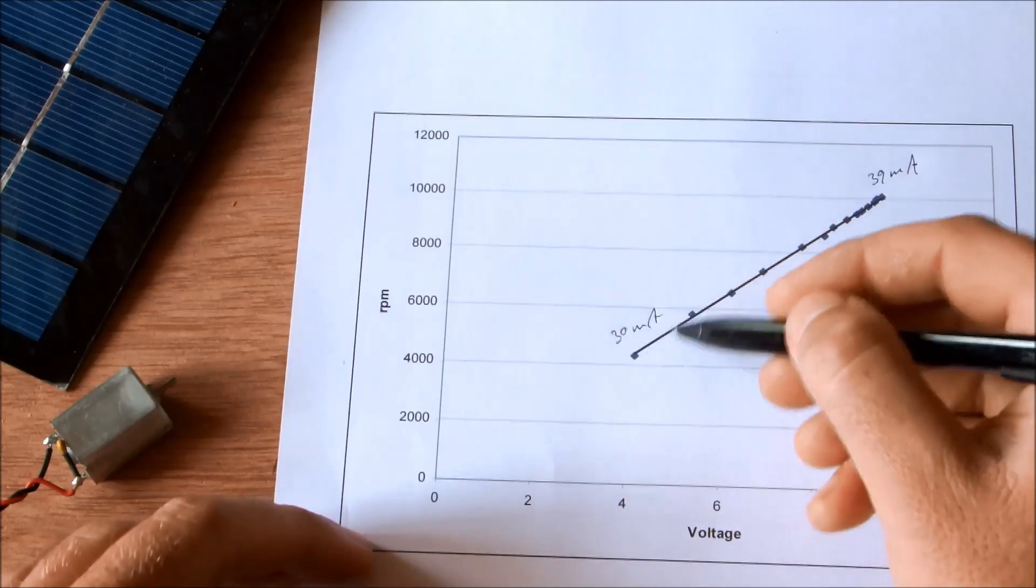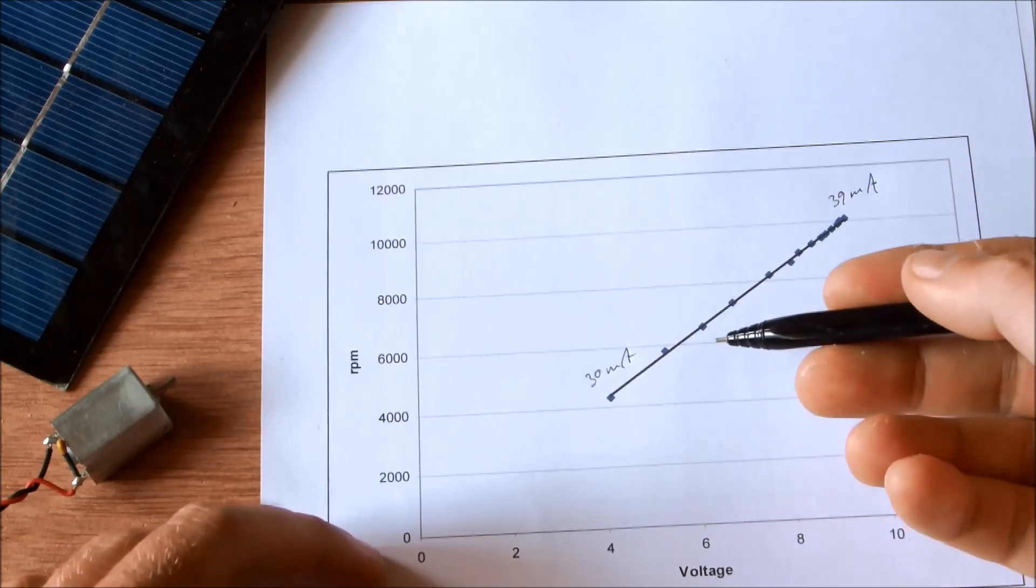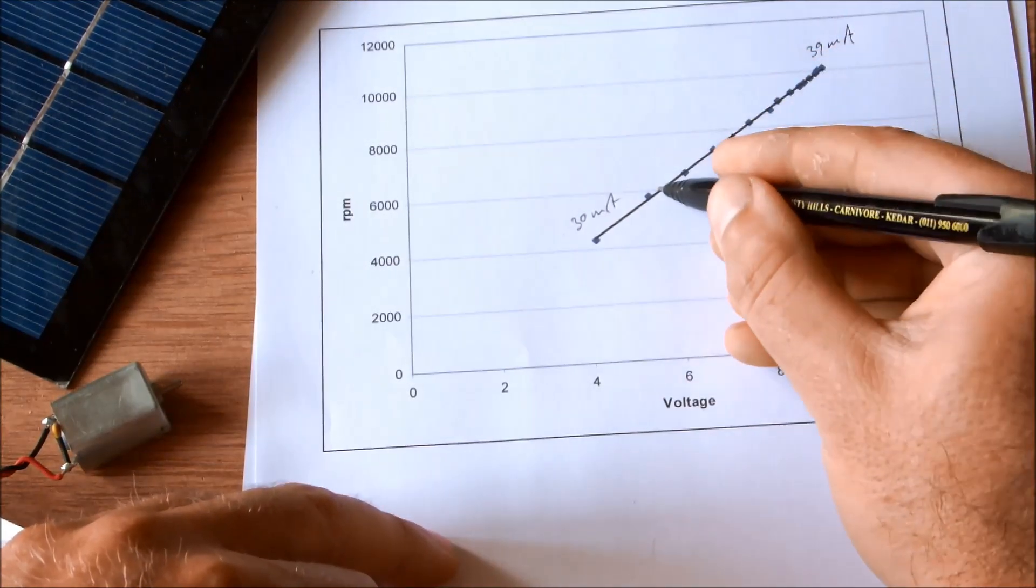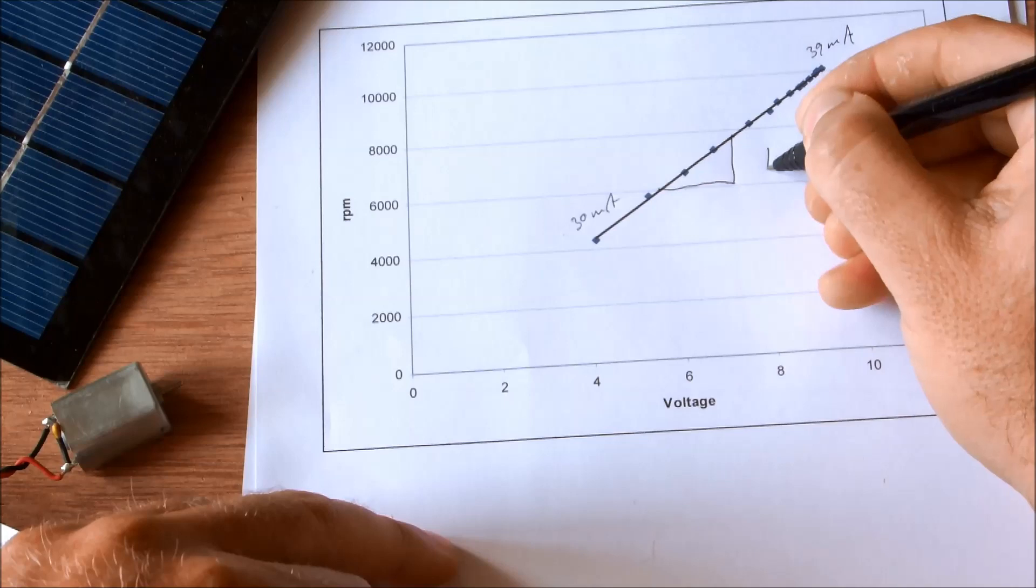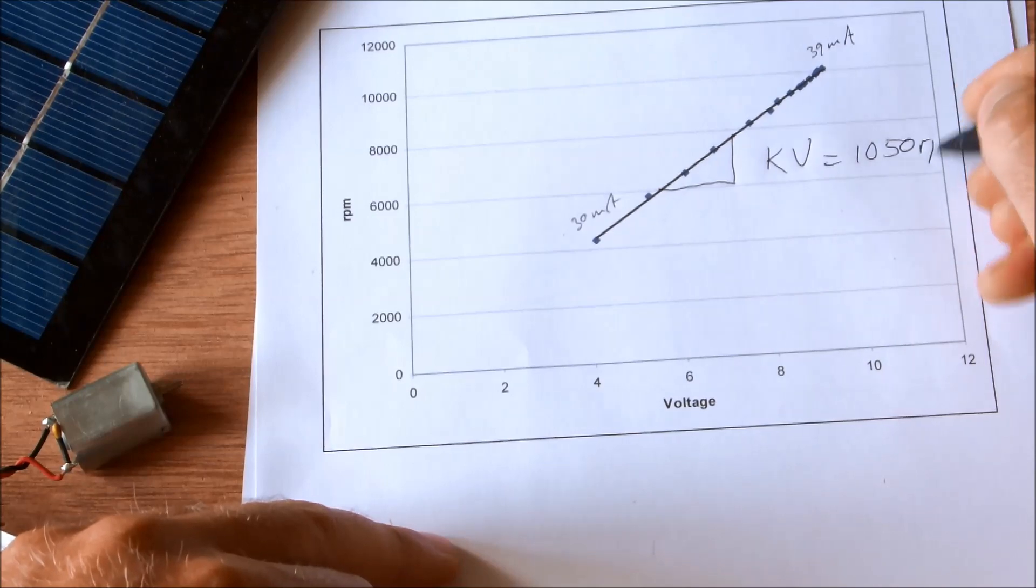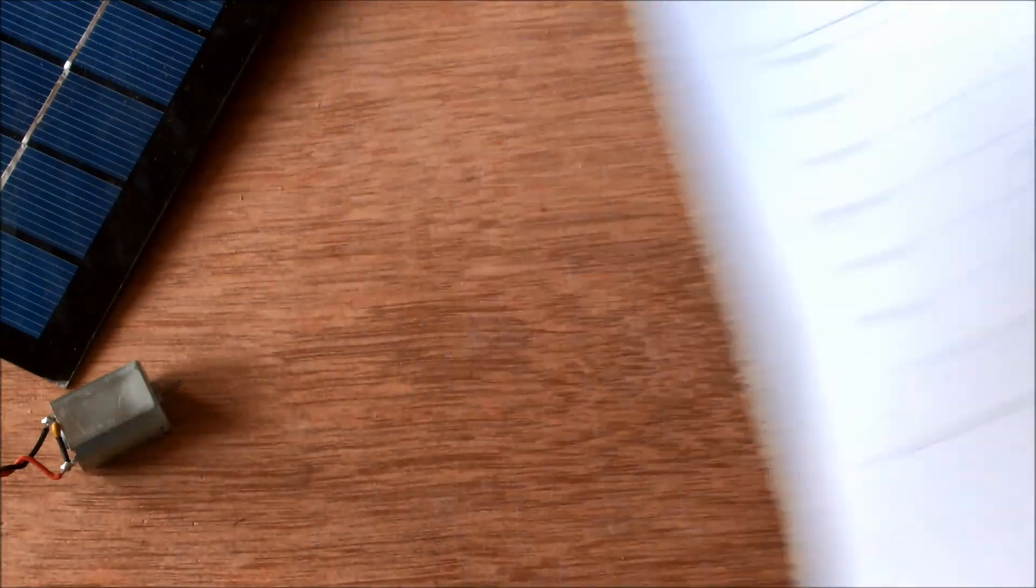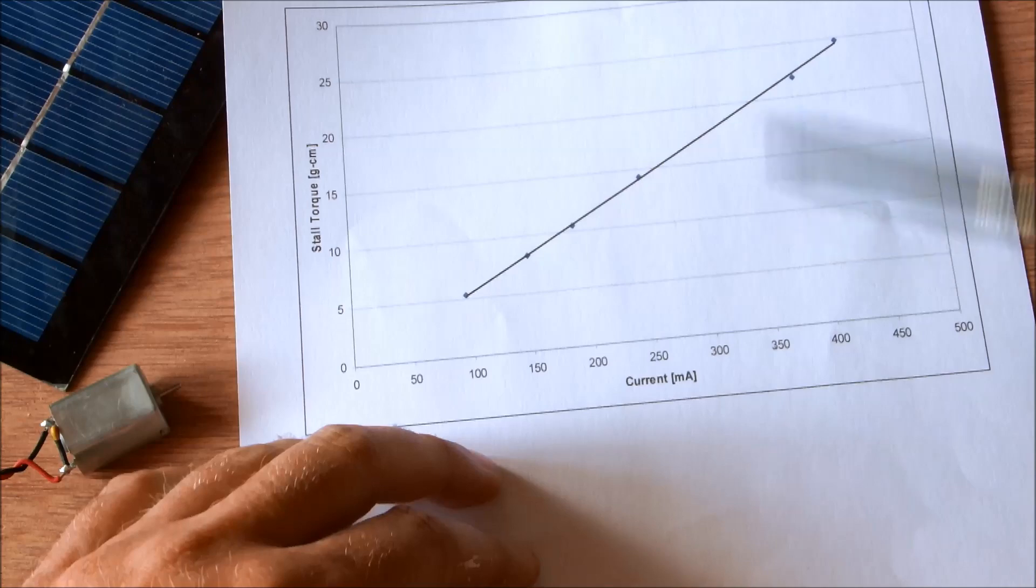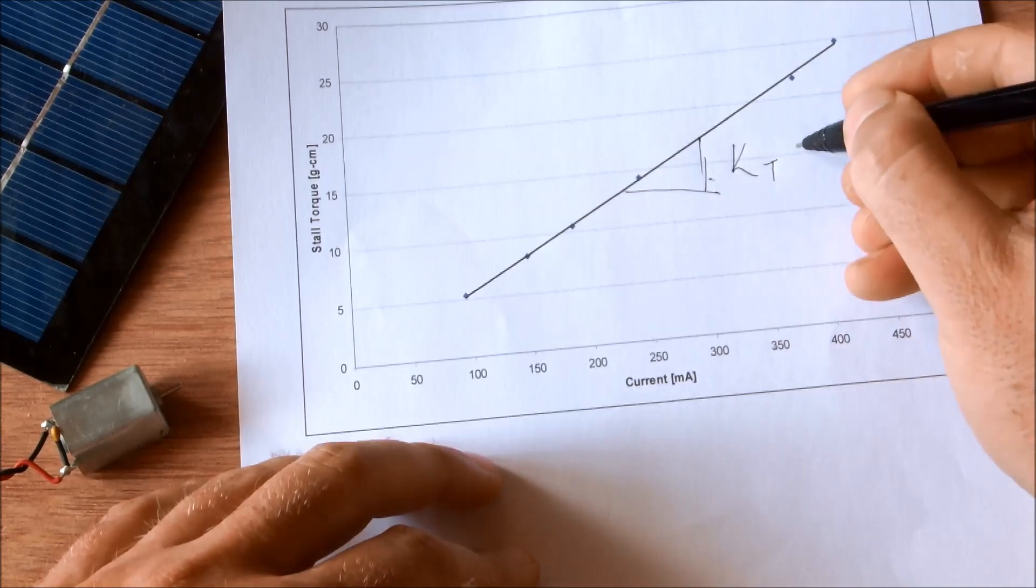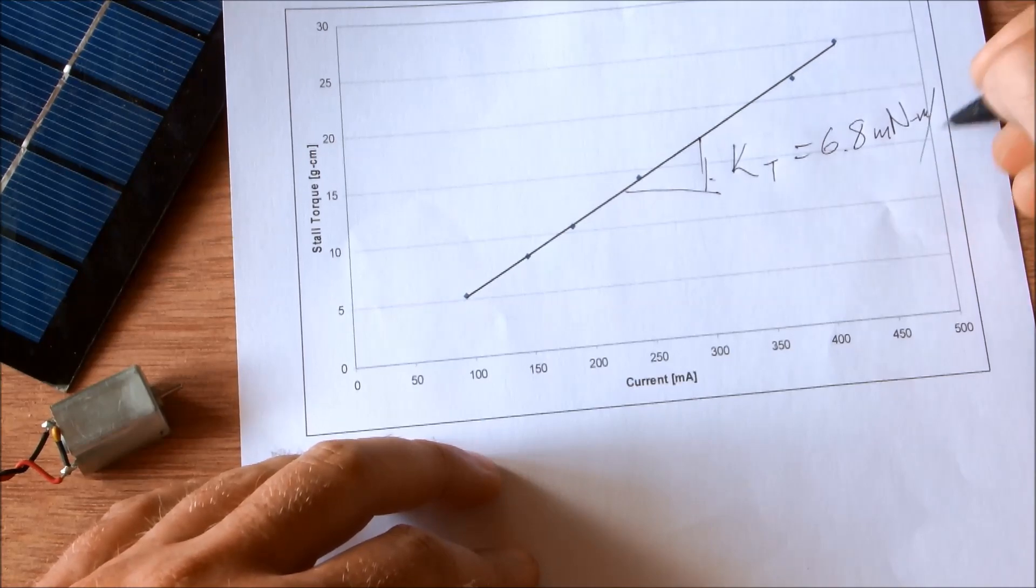That current over there is really just to provide torque that is necessary to overcome the internal friction of the motor without it being loaded. The KV value which is really just this slope came out to about 1050 rpm per volt. I can work out the slope for a torque constant as well. And that came to 6.8 millinewton meter per amp.